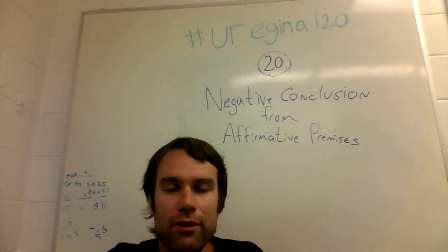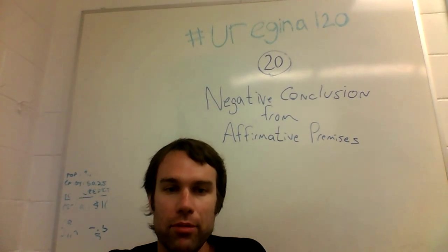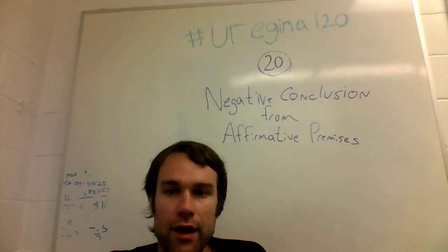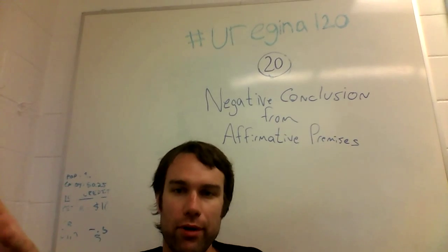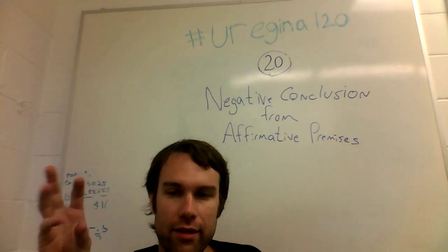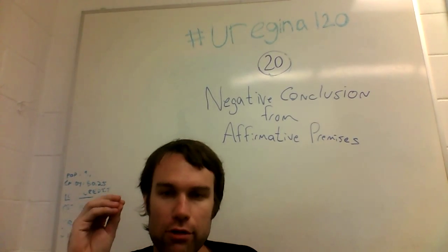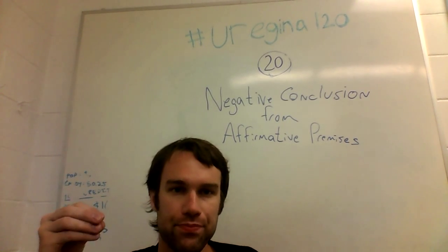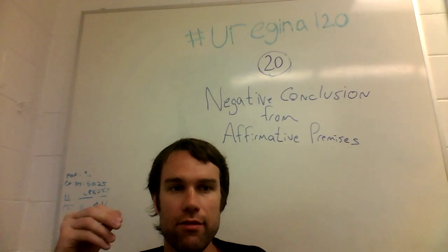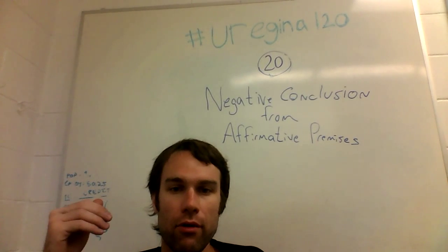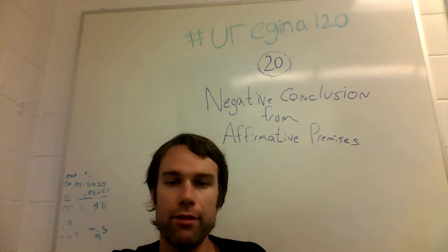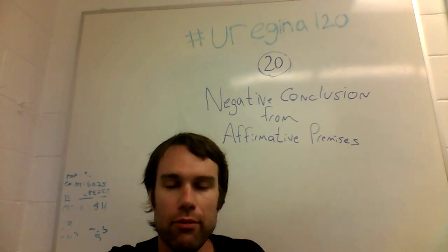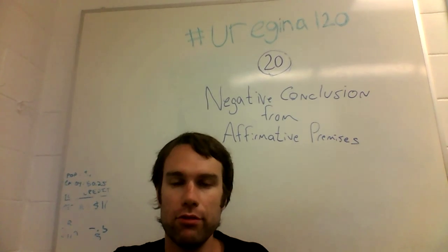We have this problem of resolving differences and different beliefs, and we have this communication network, and we have the vague idea that we need to think correctly and in ways conducive to producing truth. The next step is to look at how we have thought in the past, what the way to reason correctly is, and whether we can use anything towards that end.